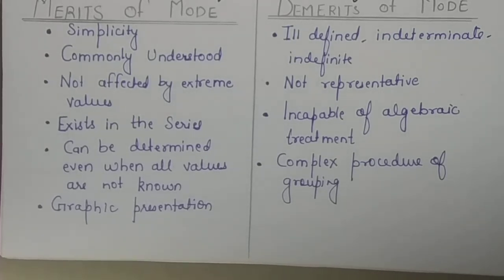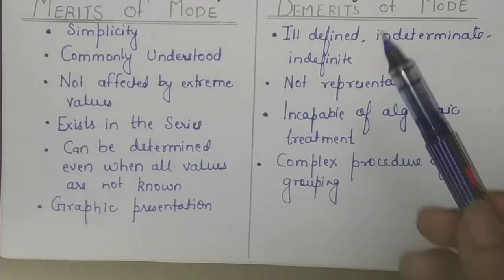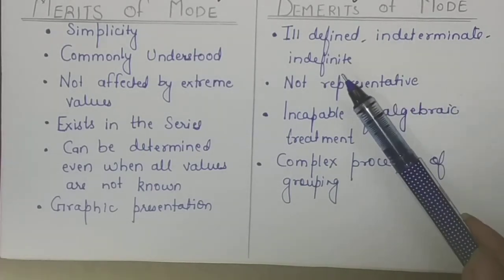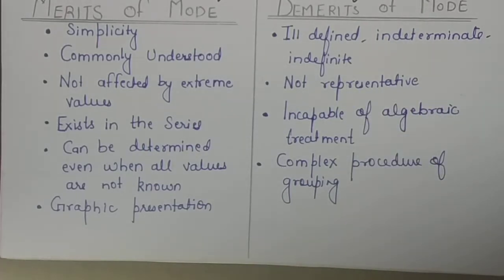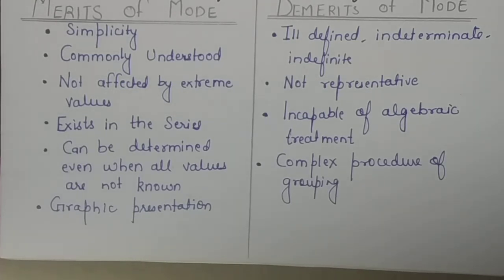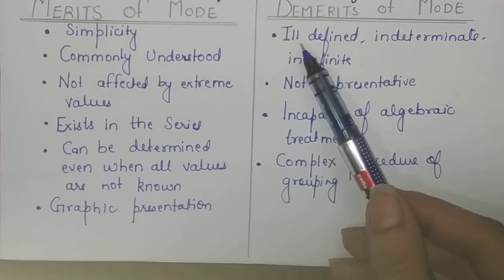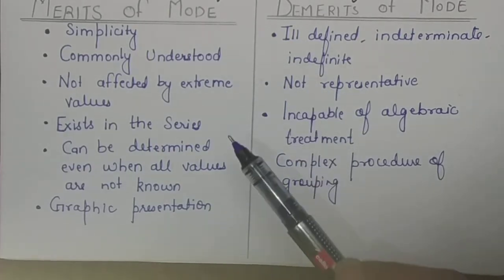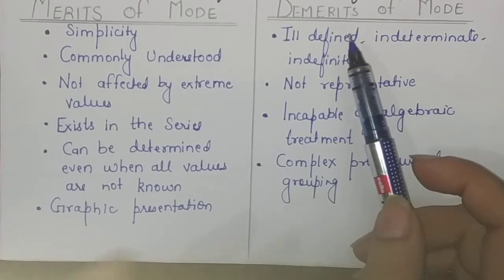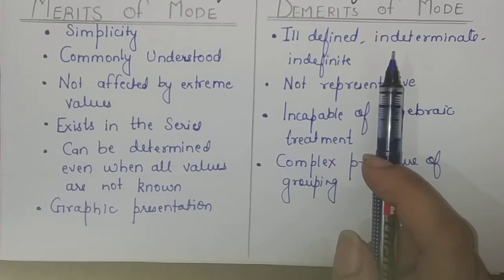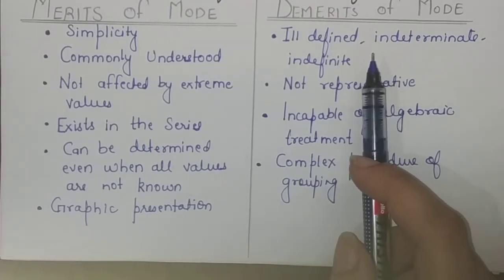Now for the demerits. Mode is indeterminate and indefinite. If you have a bimodal or multimodal series, the mode is not rigidly defined — it can be 2, 3, or 4 values. As a measure of central tendency, we expect one single value as the answer, but in mode that is not always the case.